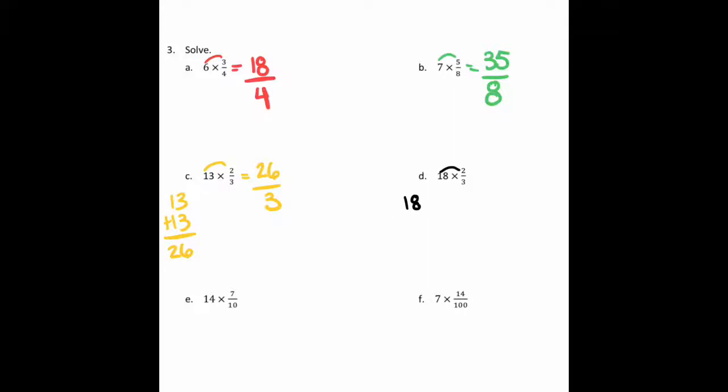On D I have 18 times 2 thirds. If you don't know what 18 times 2 is, we can do that down here. Remember 8 times 2 would give you 16, and 10 times 2 would give you 20. So when you add those together, you get 36, so you get 36 thirds. On E you have 14 times 7 tenths, so 14 times 7. I'm going to do that off to the side. 4 ones times 7 ones is 28 ones, and 1 ten times 7 is going to be 70. So I'll get 28 plus 70, which will give you 98, so I'm going to say 98 tenths.